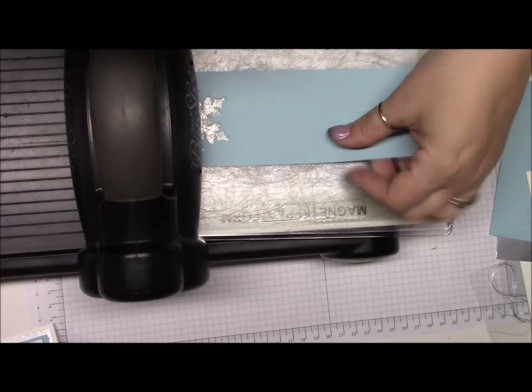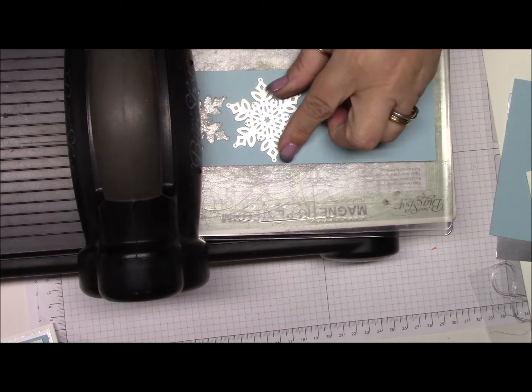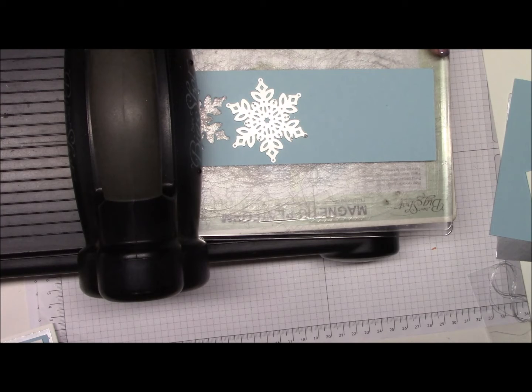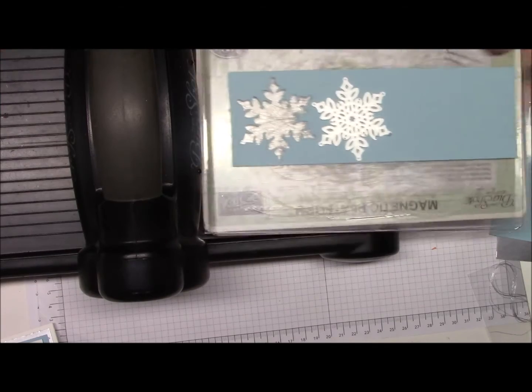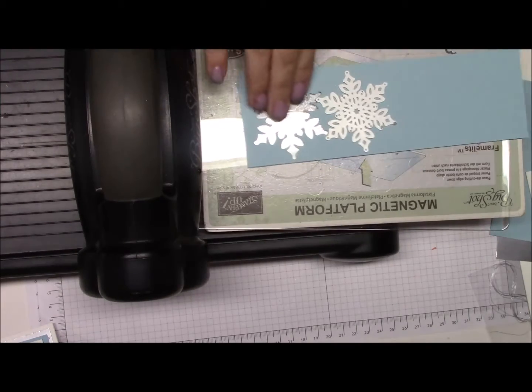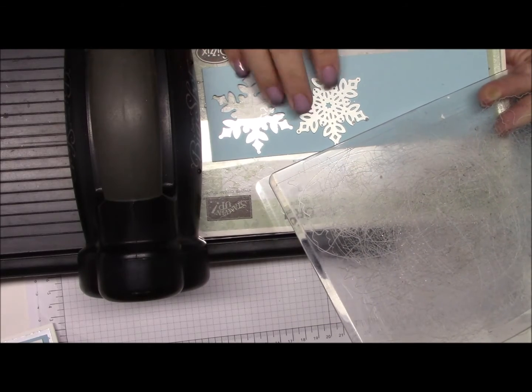So we're going to take the Balming Blue piece and put this on here. You only need two of these, and I gave you a big enough piece so you can get a couple extras. Now I have a magnetic platform. You don't need that. If you have a regular platform, that works great too.